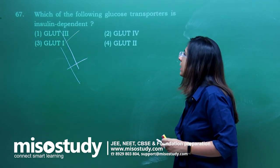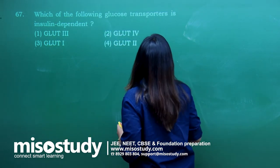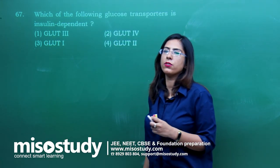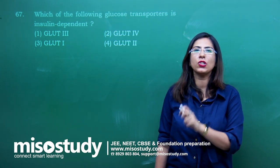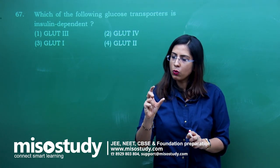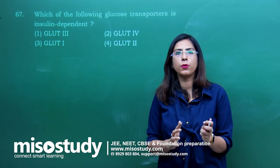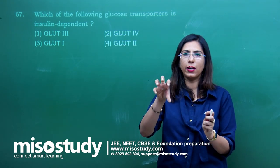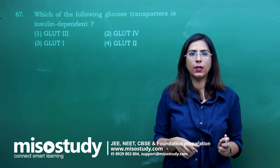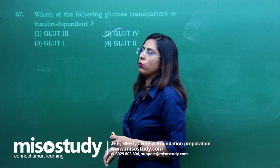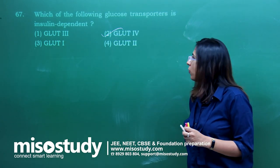Question number 67 — which of the following glucose transporters is insulin dependent? GLUT stands for glucose transporter. The glucose transporter that is associated with insulin and helps in transport in response to insulin is GLUT4. Option 2 is correct.